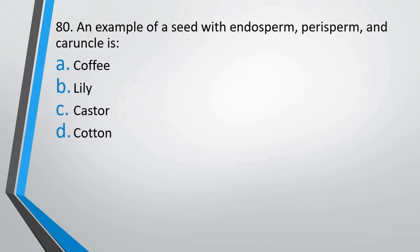Question number 80: An example of a seed with endosperm, perisperm, and caruncle is — coffee, lily, castor, or cotton? The correct answer is option C, that is castor.